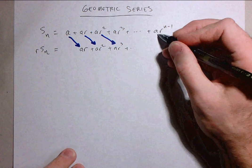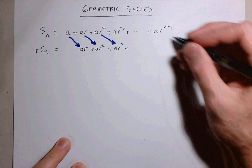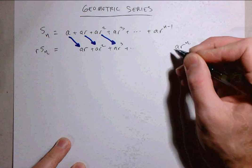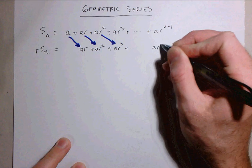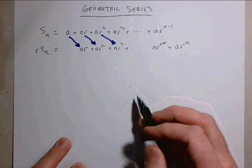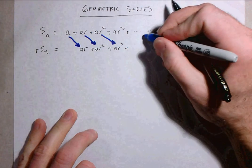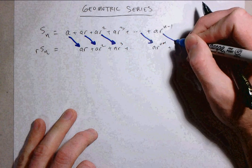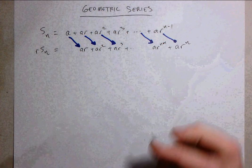Now here this term will get shifted over to a r to the n. But there will still be an a r to the n minus 1 here. Because there was an a r to the n minus 2 right there that would have gotten shifted over.